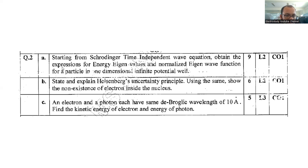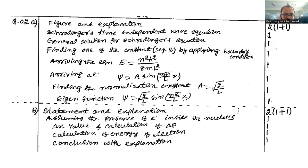Question number 2a: Starting from the Schrödinger time independent wave equation, obtain the expression for energy eigenvalue and normalized eigenvalue function for the particle in one dimension infinite potential well. Weightage is nine marks. These are the things you need to include for the examination. Figure and explanation carries two marks, Schrödinger time independent equation one mark.